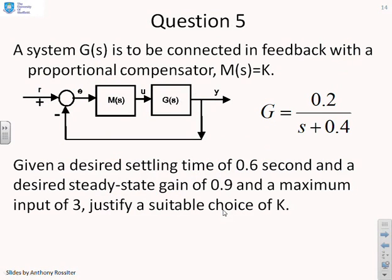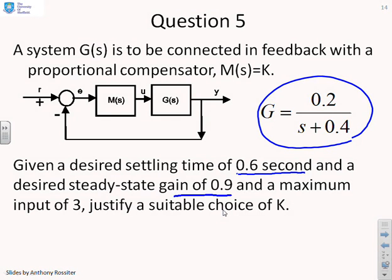Final question then. A system is to be connected in feedback with a proportional compensator, m equals k. And you can see the system. There it is, g equals 0.2 of s plus 0.4. Given a desired settling time of 0.6 seconds, a desired steady state gain of 0.9 and a maximum input of 3 justify a suitable choice of k. So what we're going to have to do is look at these specifications and see what does this tell us about the required k.